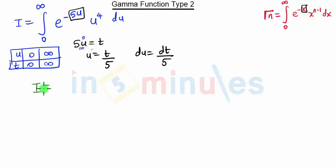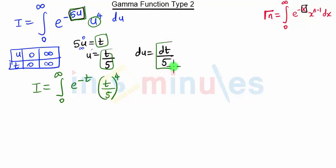Our new equation becomes I equals integration 0 to infinity e raised to minus t, and instead of u it is t by 5 the whole raised to 4, times du which is dt by 5.